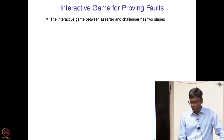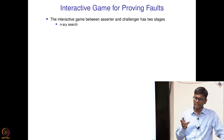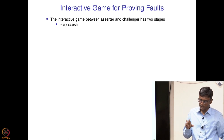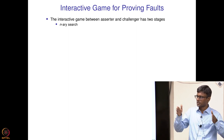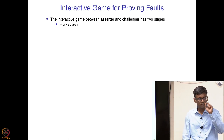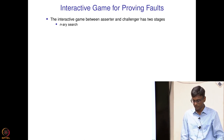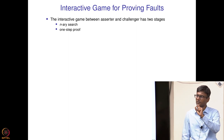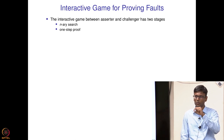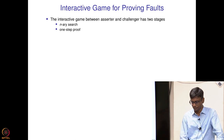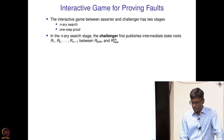The interactive game has two stages: first an n-ary search (not just bisection), and then a one-step proof. In the n-ary search stage, the opcodes op1 through opN are divided into n partitions to search for the first opcode where the challenger and assertor disagree. Once identified, a one-step proof is executed: the bridge contract runs that one particular opcode and determines who is correct and who is wrong.